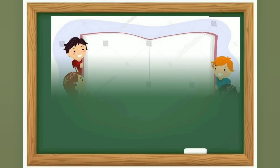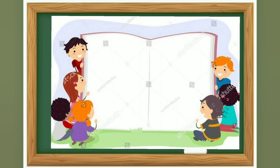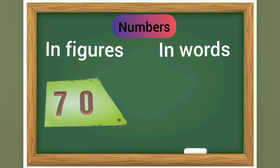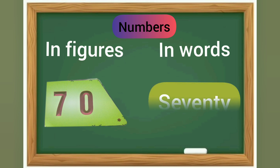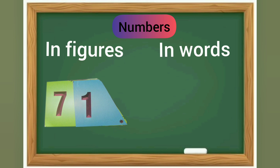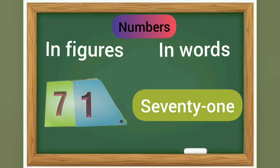Students, open your notebooks and write numbers in figures and in words. Our first number is 70 and in words it is S-E-V-E-N-T-Y, seventy. 70 and 1 is 71. In words: S-E-V-E-N-T-Y O-N-E, seventy-one.